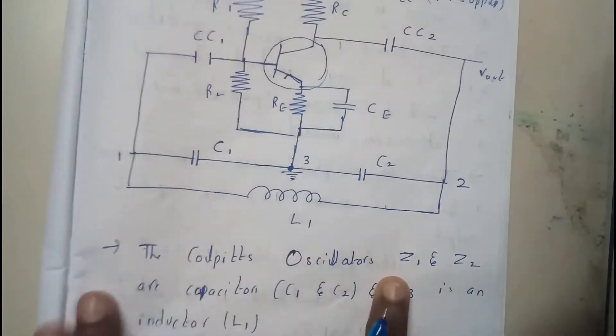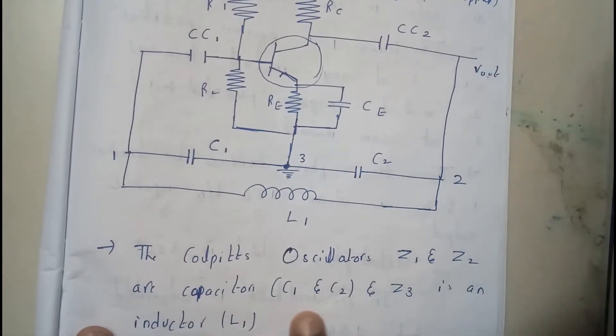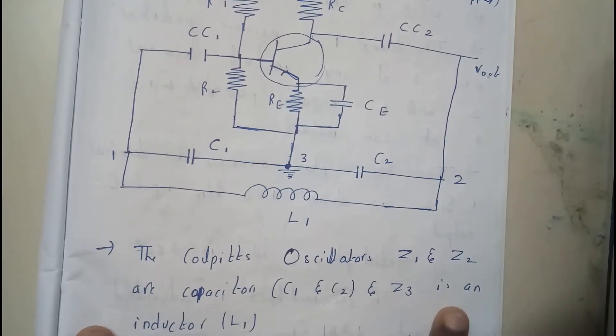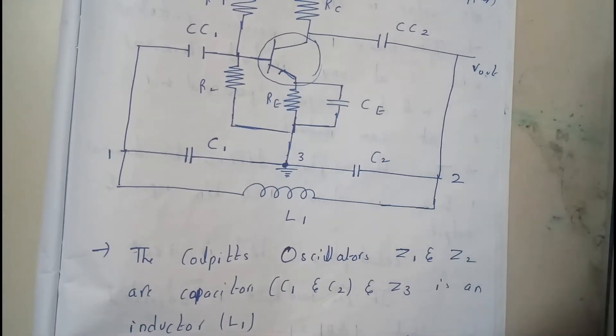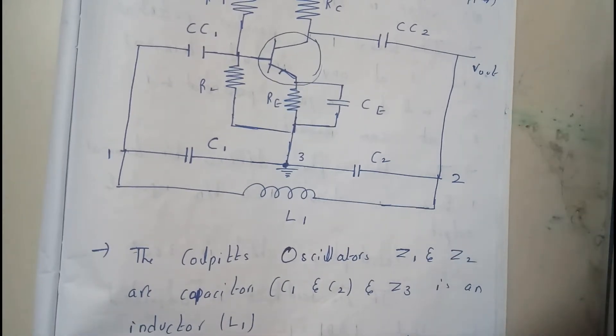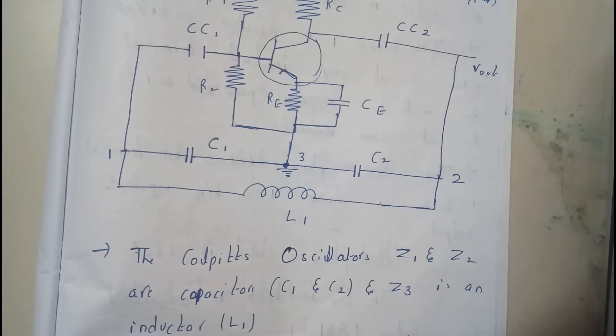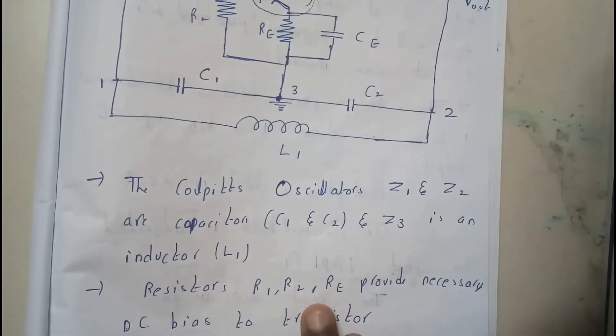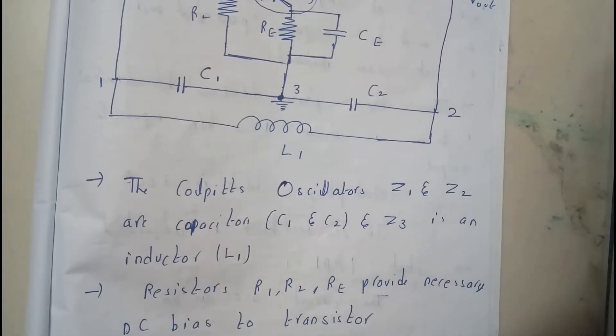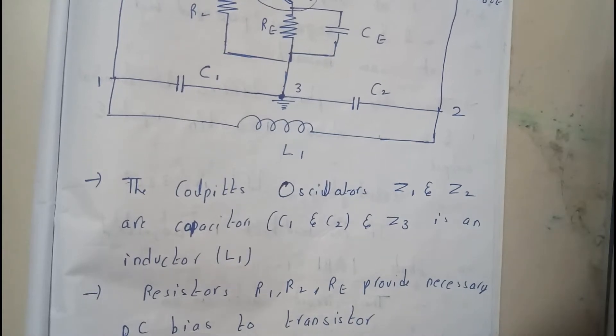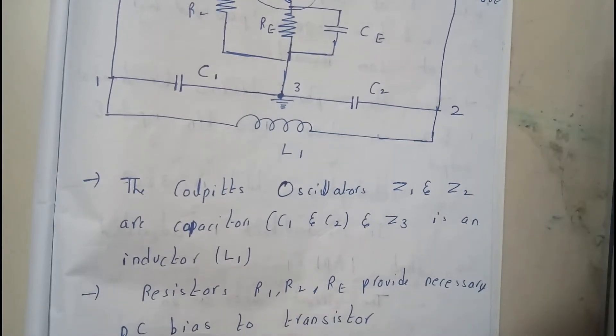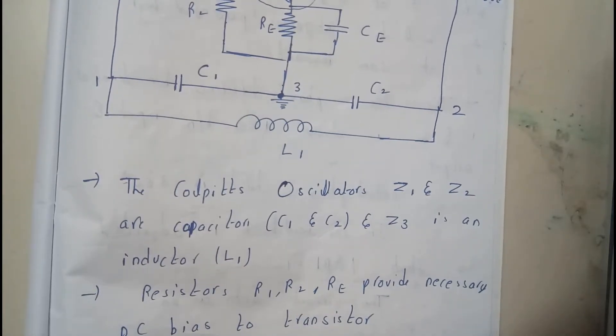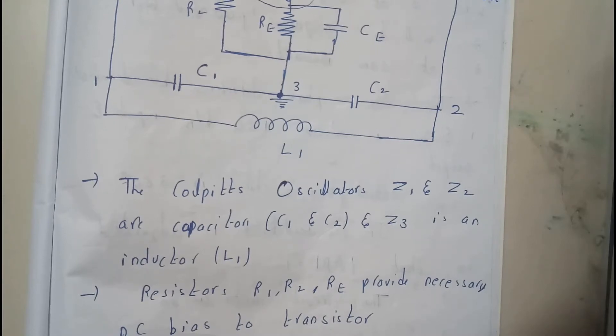The Colpitts Oscillator Z1 and Z2 are capacitors C1 and C2 and Z3 is an inductor. So I hope everyone is now 100% clear with it. And resistors R1, R2 and RE provides necessary DC bias to transistor. So this is also similar point to that Hartley Oscillator.